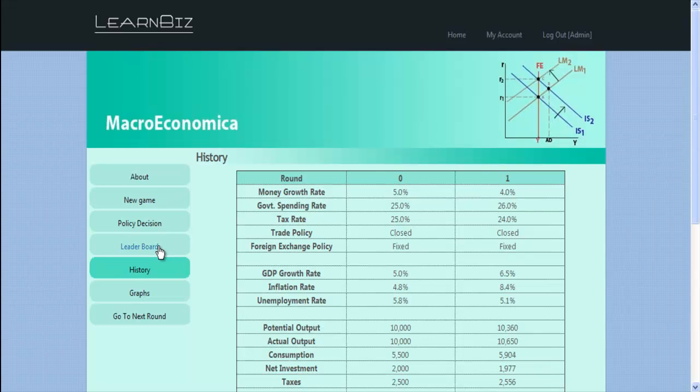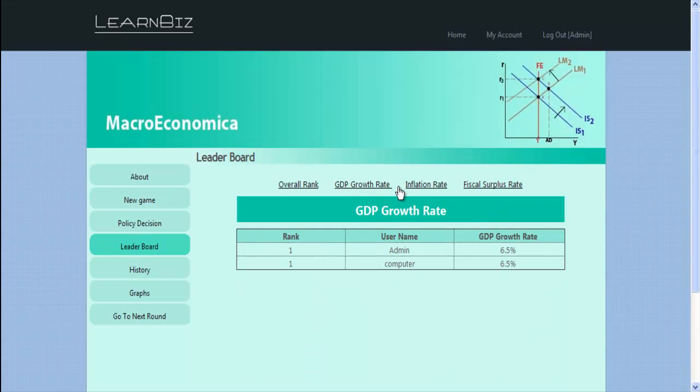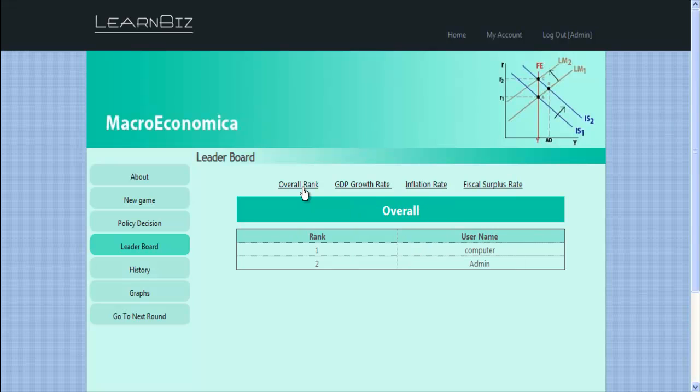The participant is judged on key economic variables such as GDP growth rate, inflation rate, and fiscal surplus rate. The decisions also require an appropriate element of risk as the participant is being judged in a competitive setting.